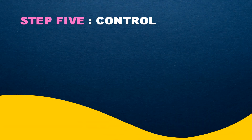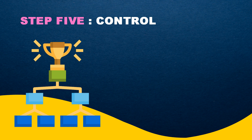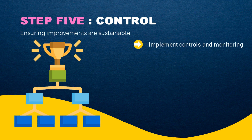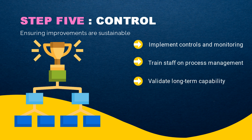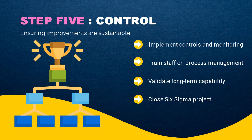Step 5: Control. Finally you will need to ensure all improvements are sustainable. You can implement controls and monitoring, train staff on process management, validate long-term capability, and close the Six Sigma project.